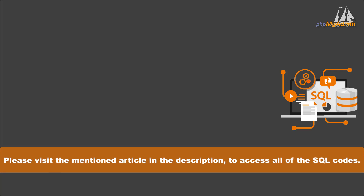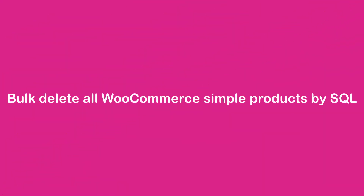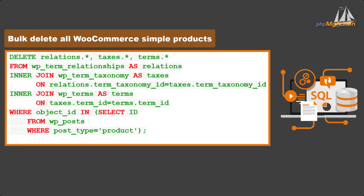Please visit the article mentioned in the description to access all of the SQL codes. To delete all products, please follow along. Bulk delete all WooCommerce simple products by SQL. The following code is for deleting all WooCommerce simple products. Copy and paste the following code in the indicated section, then press Ctrl+Enter and wait for the code to be applied.